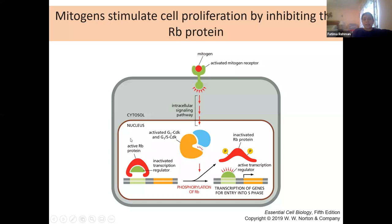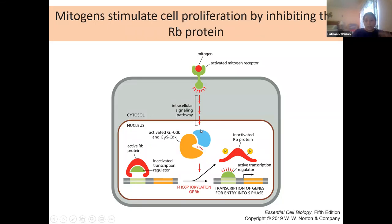The S phase CDKs control replication through origin recognition complexes (ORC), which sit on origin of replication sites throughout the genome. These are normally also bound by inhibitory proteins like CDC6 to keep replication from happening prematurely. When DNA helicase binds to the DNA along with CDC6 and the complex, it causes CDC6 to dissociate, allowing the DNA to be opened.